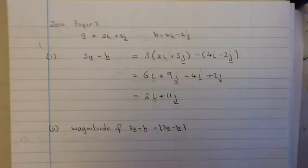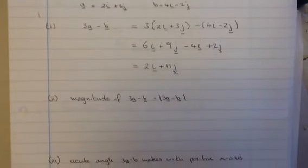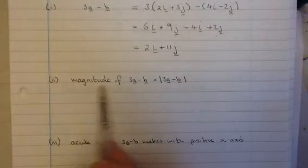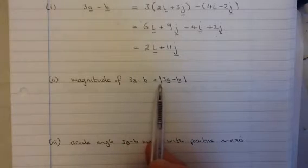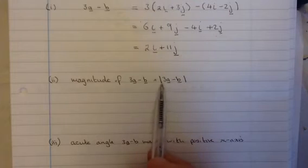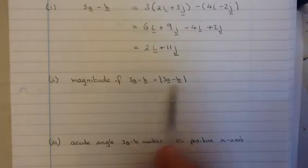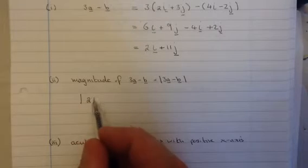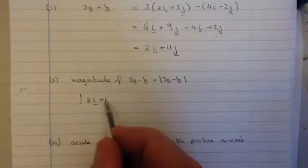Okay, so now we know what 3a minus b is. So the next question is to find the magnitude of 3a minus b. Now the symbol for magnitude is a pair of parallel vertical lines either side of the vector. So what we've got to do is find the magnitude of 2i plus 11j.